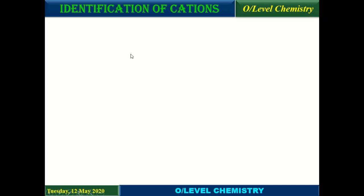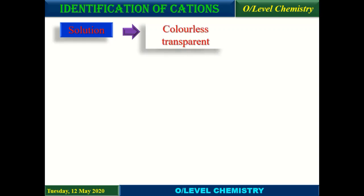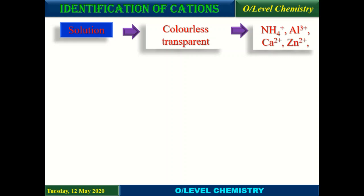In our previous lecture, we studied the identification of ions from the colorless solution. If we are provided a colorless transparent solution, it may show the presence of ammonium, aluminium, calcium, or zinc ions.